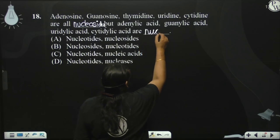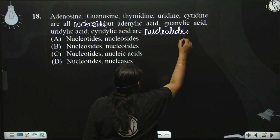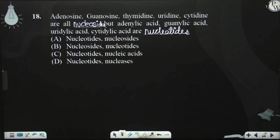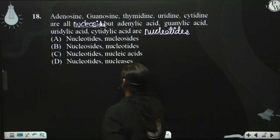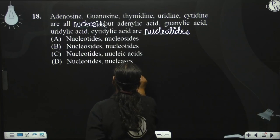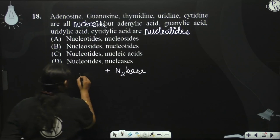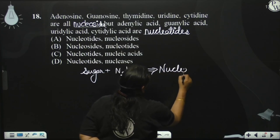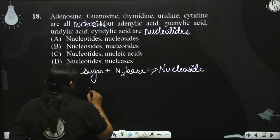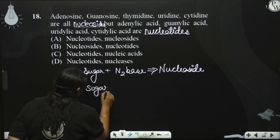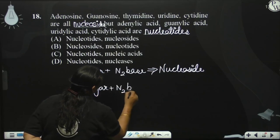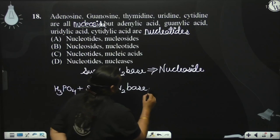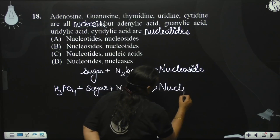These are nucleotides. To summarize: nitrogenous base plus sugar gives us a nucleoside. And if we add a nitrogenous base plus sugar plus a phosphate group, it becomes a nucleotide. Always remember this.